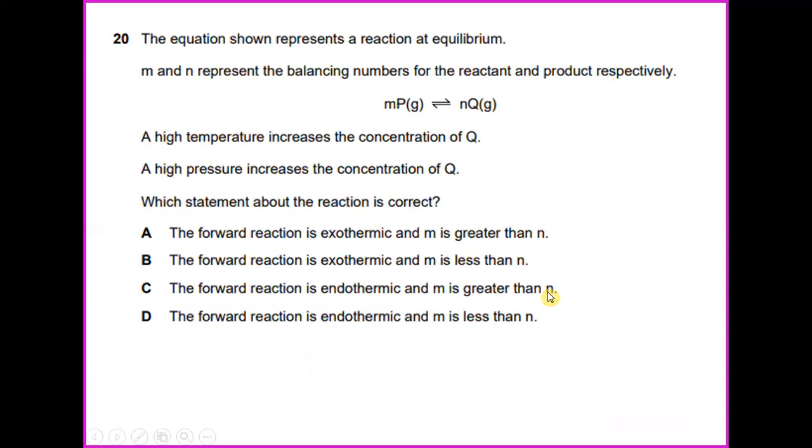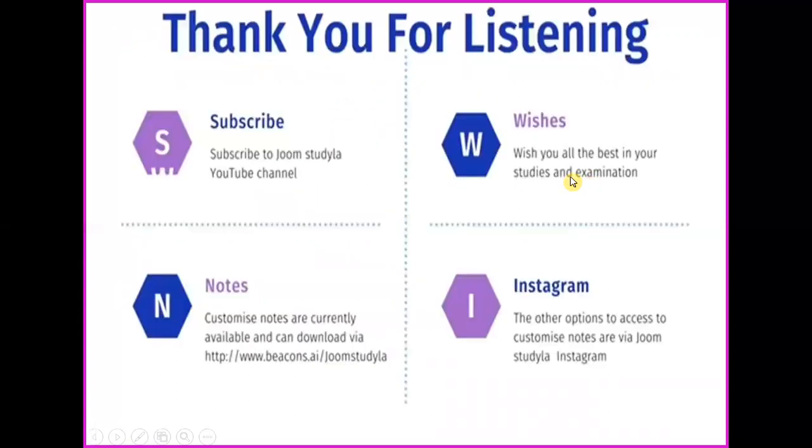The equation shown represents a reaction at equilibrium. M and N represent the balancing numbers for the reactants and products respectively. A high temperature increases the concentration of Q. A high pressure increases the concentration of Q. Which statement about the reaction is correct? You're given the forward reaction is endothermic. MP to NQ is endothermic and where M is greater than N. In this case, the answer would not be a negative value. It's a positive value because M is greater than N.